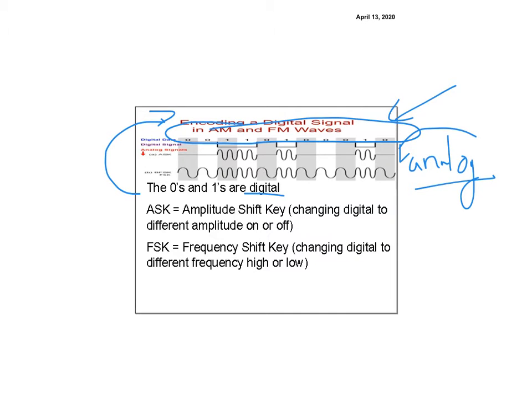So ASK, which is this one right here, it says analog and digital. But ASK, which is this one, is amplitude. So amplitude, remember, is going up and down, right? So this is my amplitude. How high it goes.